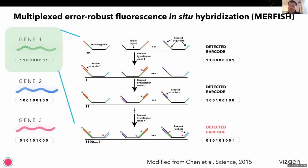What's very nice about this barcoding scheme is that it has an inherent error-checking and error-correction capability. We only use a small subset of barcodes in the available barcode space, so false positive binding events due to misbinding can be detected and even corrected. This is quite critical for highly multiplexed imaging because any error could lead to false positives.